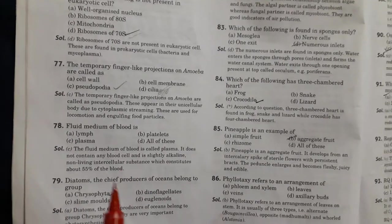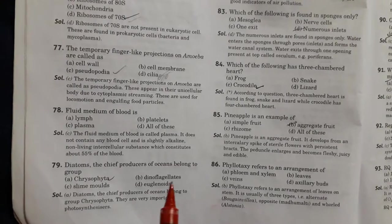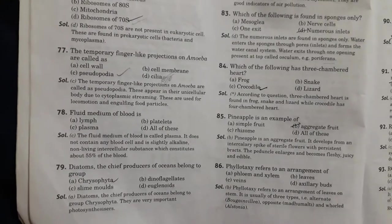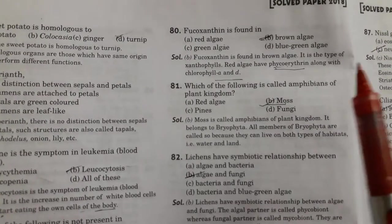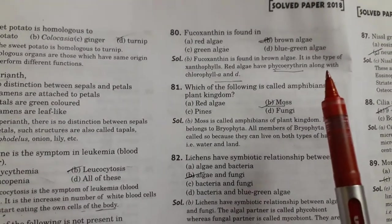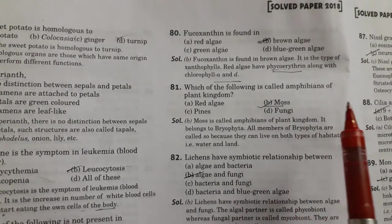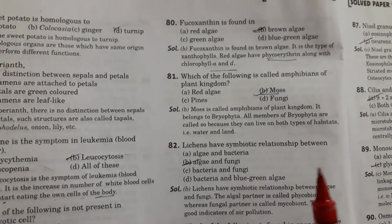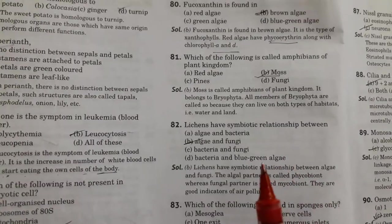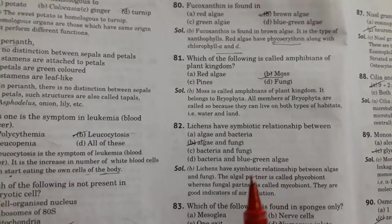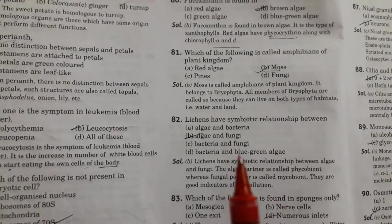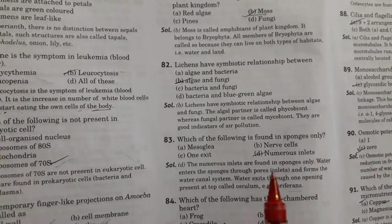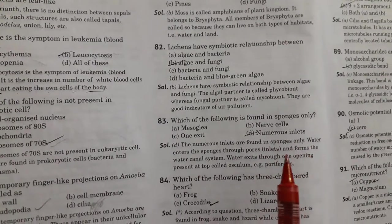Next is fluid medium of blood is plasma. Next is diatoms, the chief producer of ocean, belongs to group Chrysophyta. Option A is right. Next question is phycosanthin is found in brown algae. Then which of the following is called amphibian of plant kingdom. So the moss is called. Next is lichens have symbiotic relationship between algae and fungi. Next is which of the following is found in sponges only. So the sponges are found in numerous inlets.